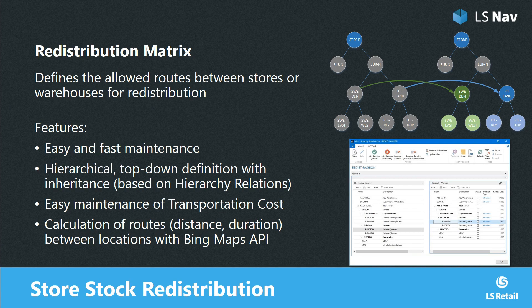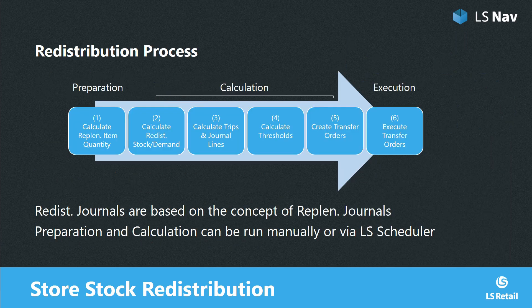The maintenance of this matrix is very simple, and due to the concept of inheritance even companies with many stores can do this with small effort. The redistribution process is divided into three main phases: preparation, calculation, and execution. In the preparation phase, we calculate a snapshot of the current stock situation across all items, variants, and stores — called the replenishment item quantity. This is the same snapshot used for purchase and transfer replenishment journals, so if you use replenishment and redistribution together, this snapshot needs to be calculated only once.